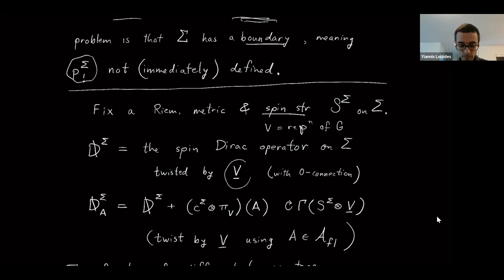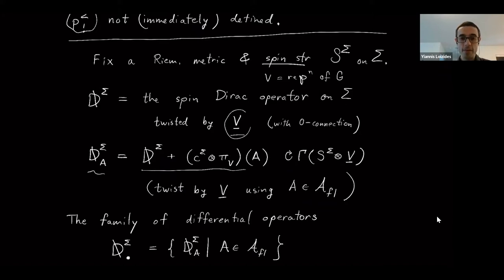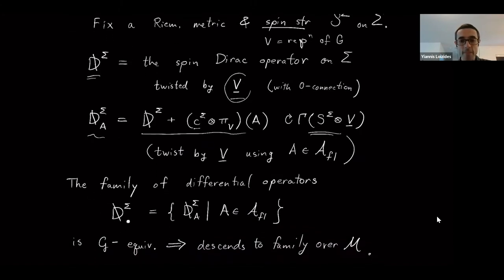I'll write D-slash-Sigma for the spin Dirac operator twisted by the trivial vector bundle V with the zero connection. If I have a connection capital A, I write D-Sigma-sub-A for the operator you get if you use the connection given by A rather than the trivial connection. One way to write that is: take this Dirac operator and add a zeroth-order term coming from the Clifford action on the one-form component of A and the representation on the algebra part of A. This gives a zeroth-order term and an operator that acts on sections; all of these operators have the same symbol and differ only by these zeroth-order terms.